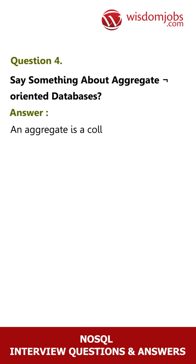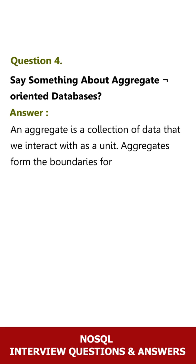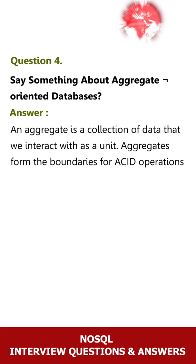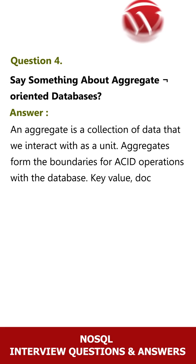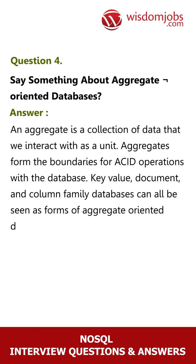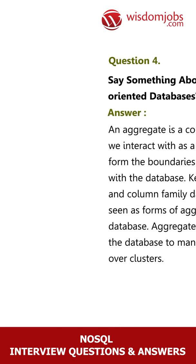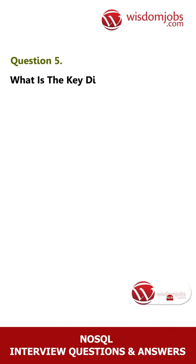Question 4: Say something about aggregate-oriented databases. Answer: An aggregate is a collection of data that we interact with as a unit. Aggregates form the boundaries for ACID operations with the database. Key-value, document, and column family databases can all be seen as forms of aggregate-oriented databases. Aggregates make it easier for the database to manage data storage over clusters.